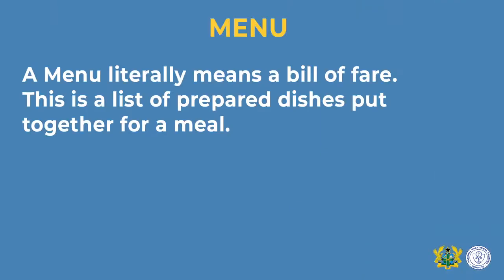What then is menu planning? A menu literally means a bill of fare. This is a list of prepared dishes put together for a meal. That is, selecting your individual dishes to make up a meal is what is termed as a menu.